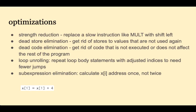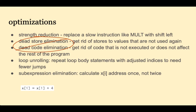There are many different optimizations; here are a few of the most important ones. Strength reduction is replacing a slow instruction like MULT with a faster instruction like SHIFT. Dead store elimination gets rid of stores to memory that are not used again. Dead code elimination gets rid of code that's not executed or doesn't affect the rest of the program. If you think about code worked on by many different programmers over years and perhaps decades, it is very possible that it could have dead code in there, and the compiler will find it.